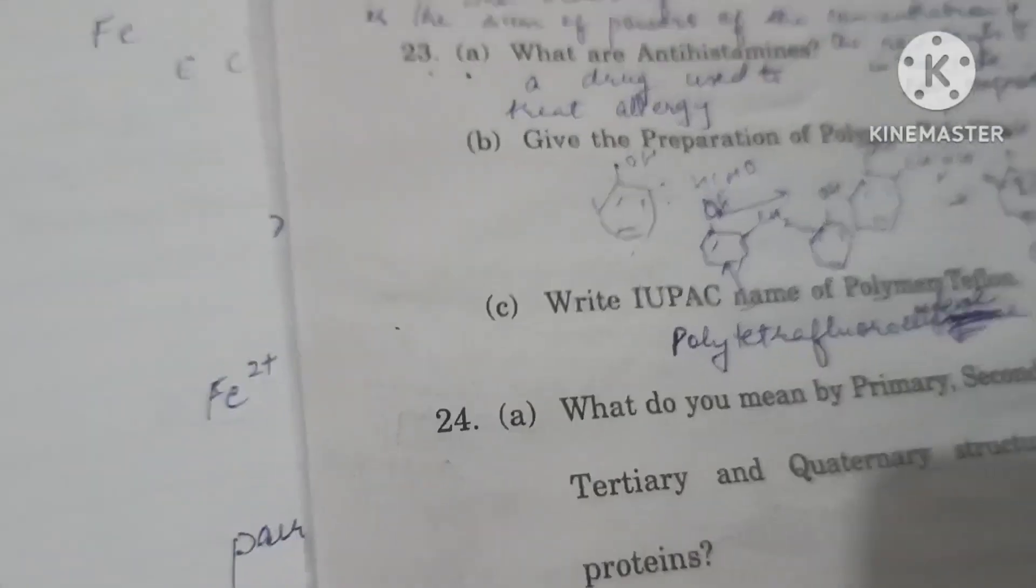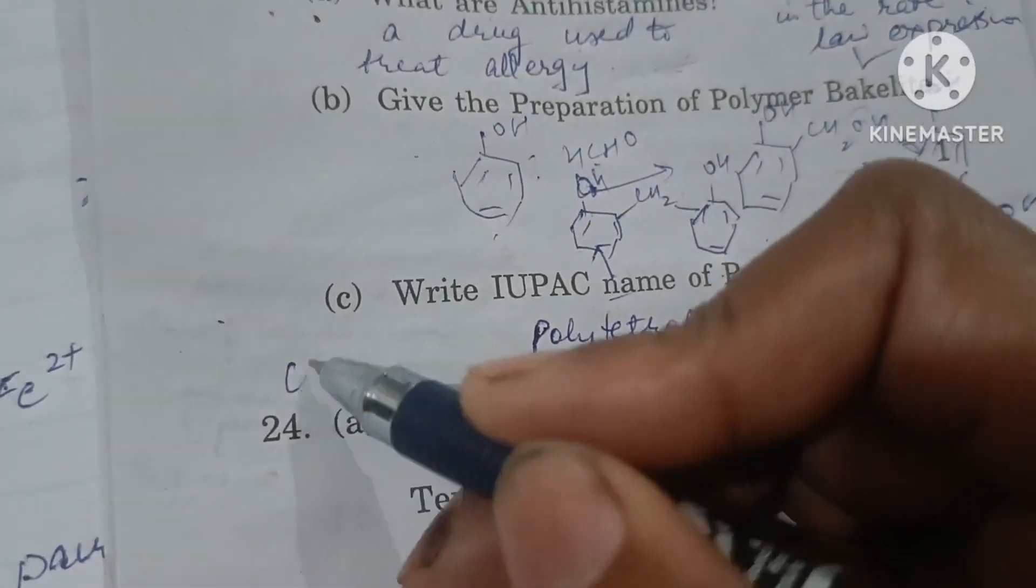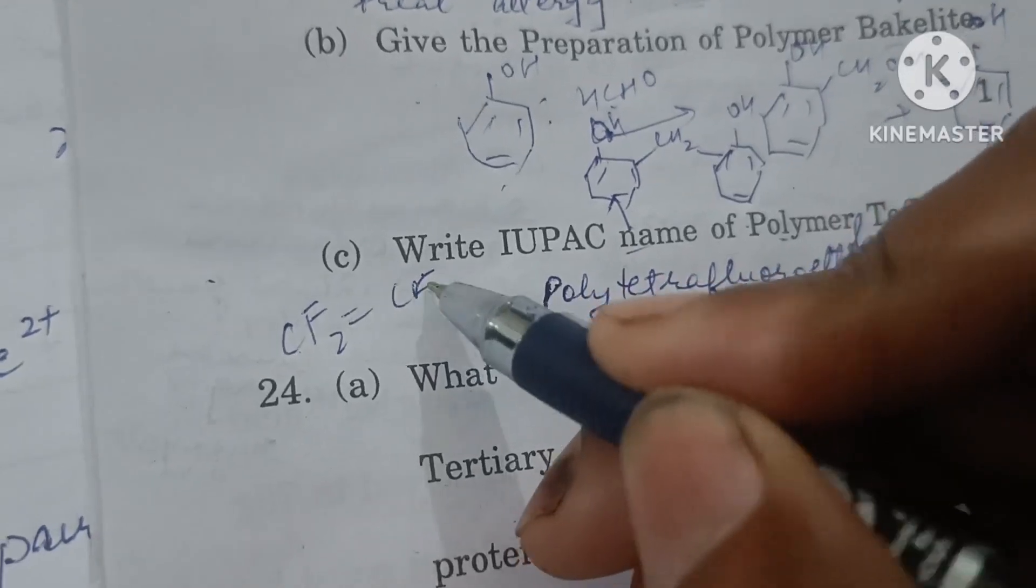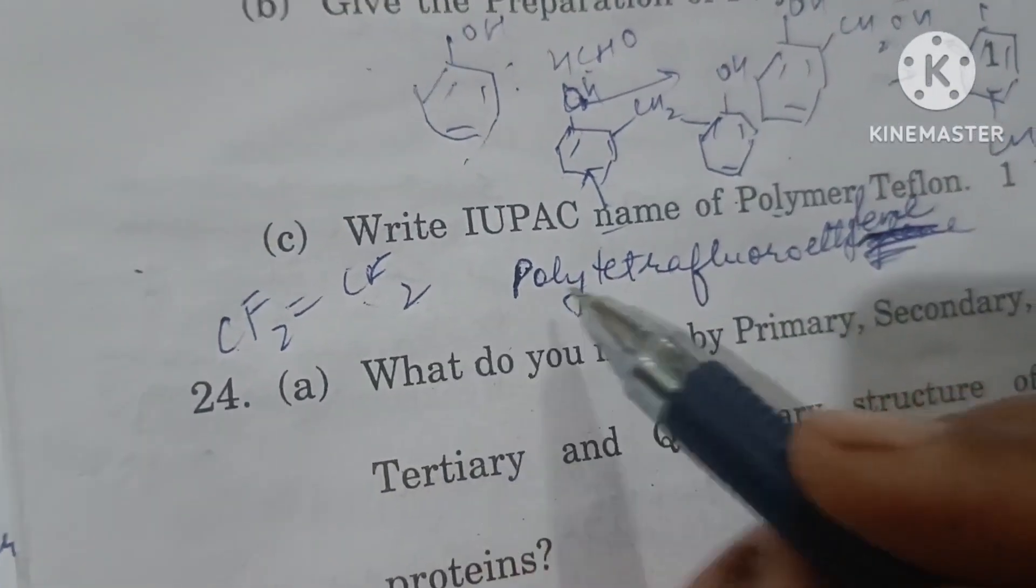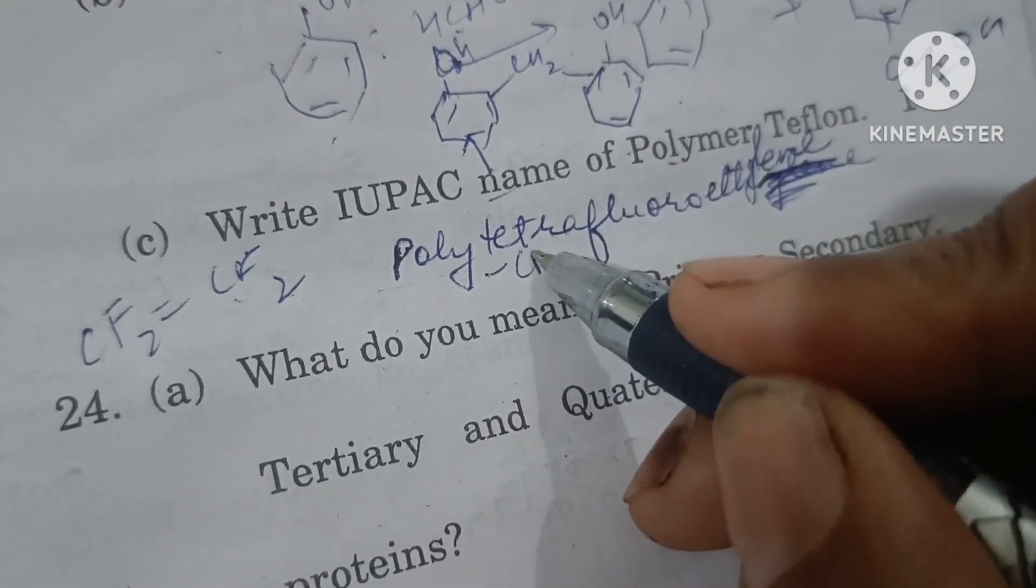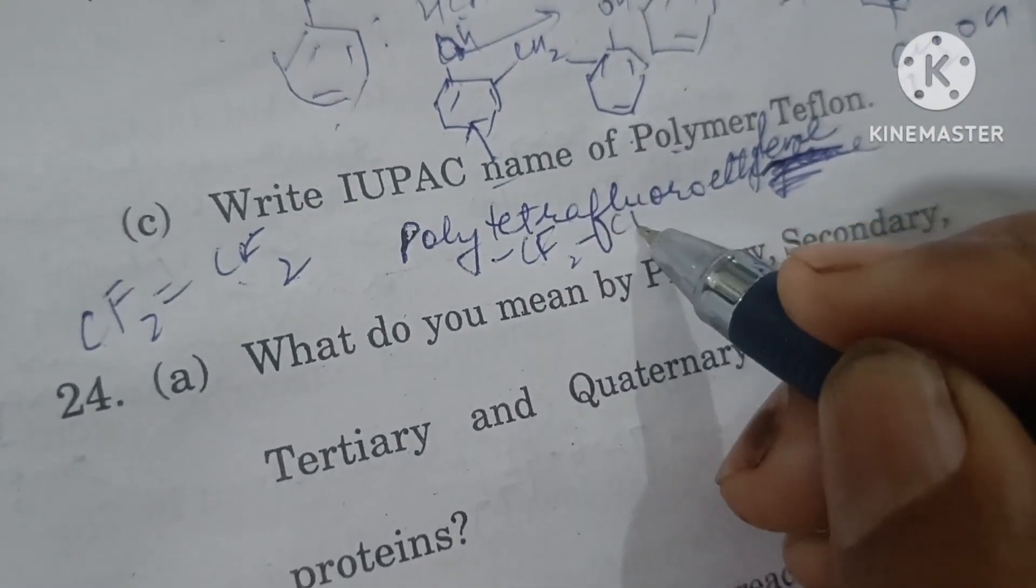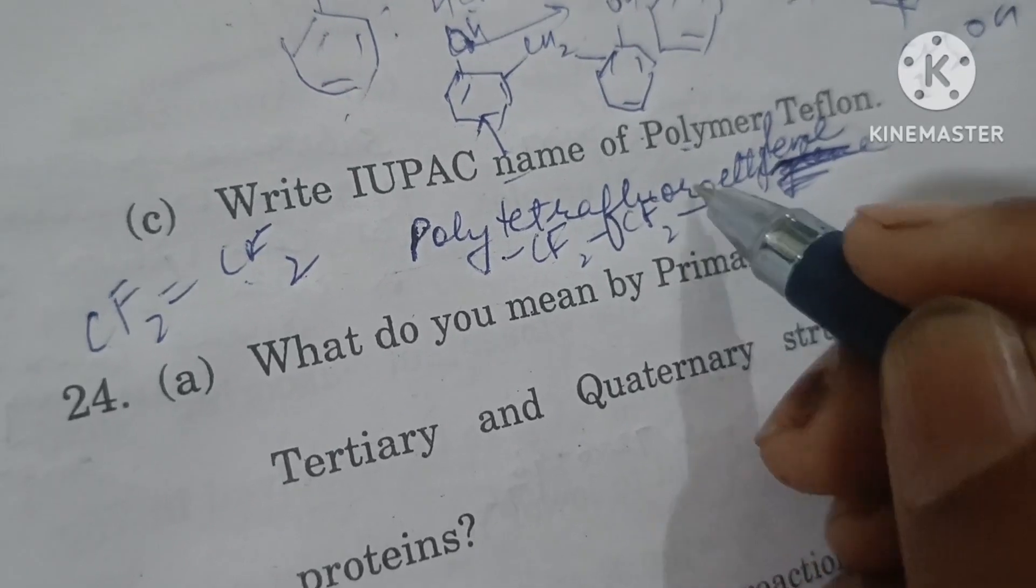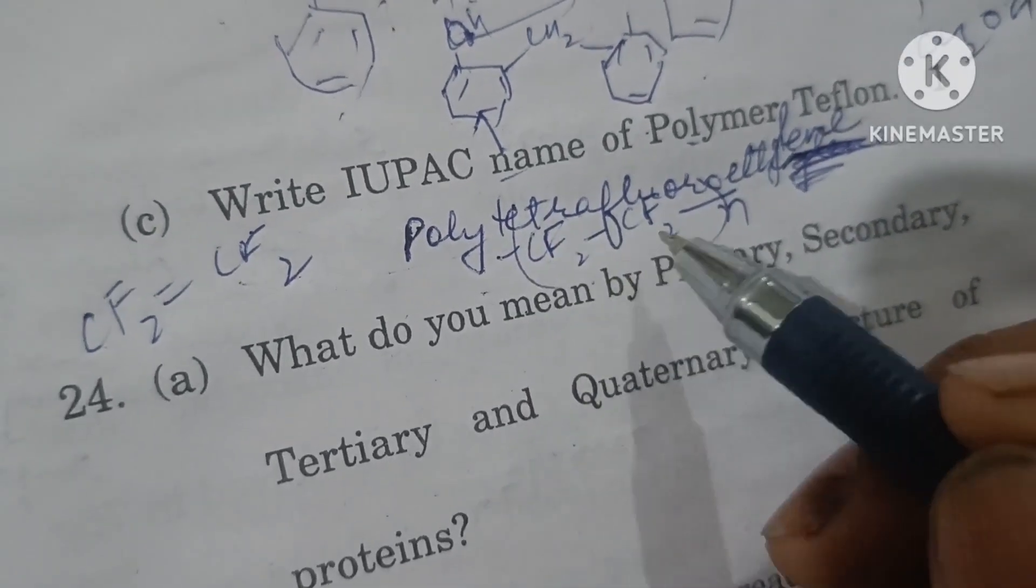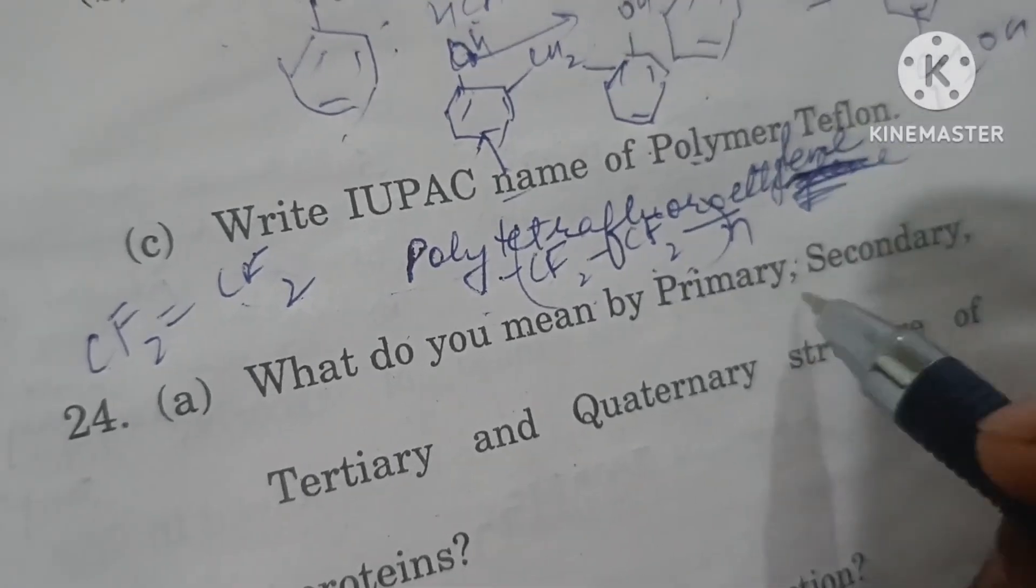Write the IUPAC name of polymer Teflon. Teflon is formed by polymerization of CF2=CF2. When this polymerizes n times, the double bond breaks and CF2-CF2 repeats n times. So we can call it polytetrafluoroethene.